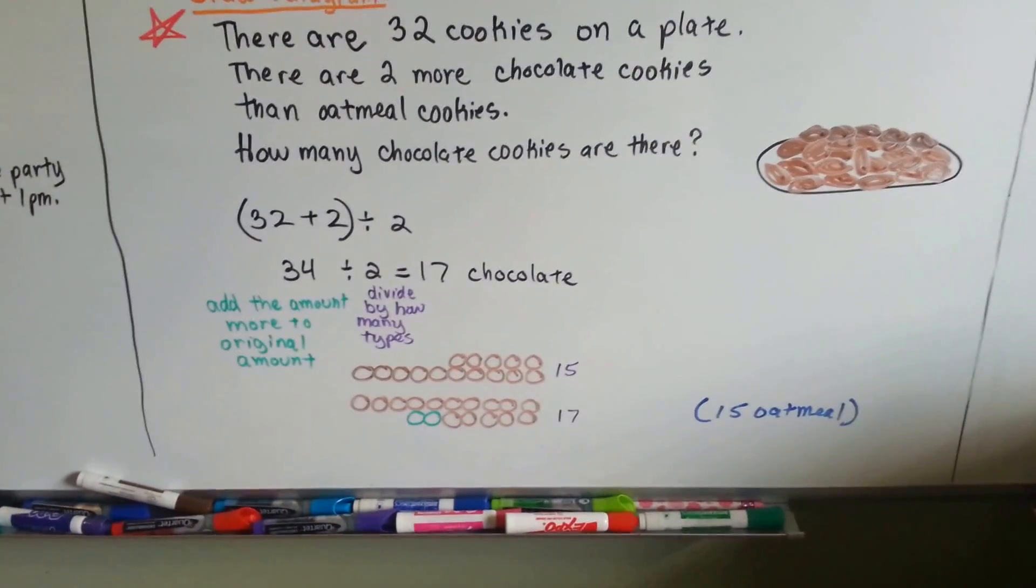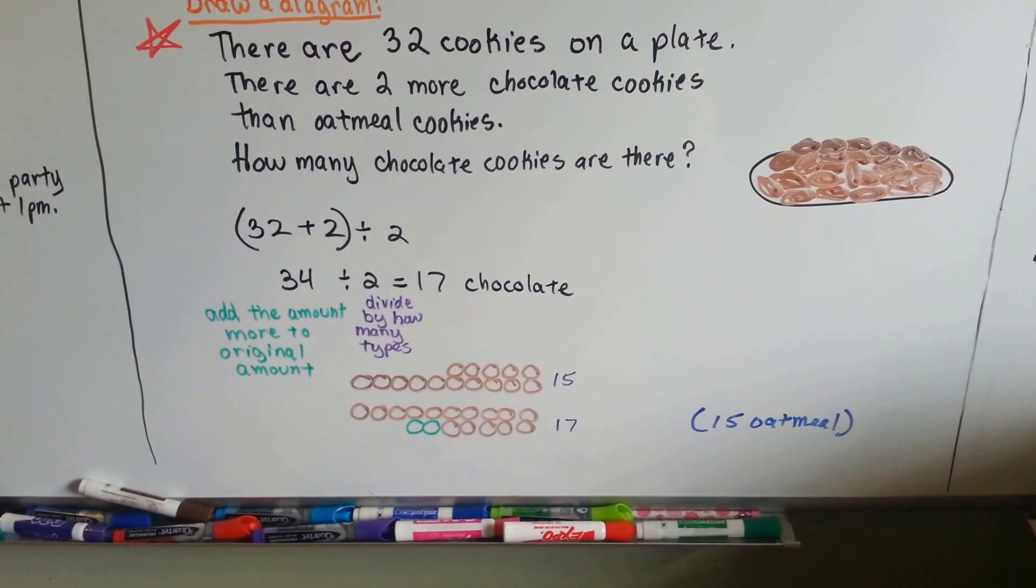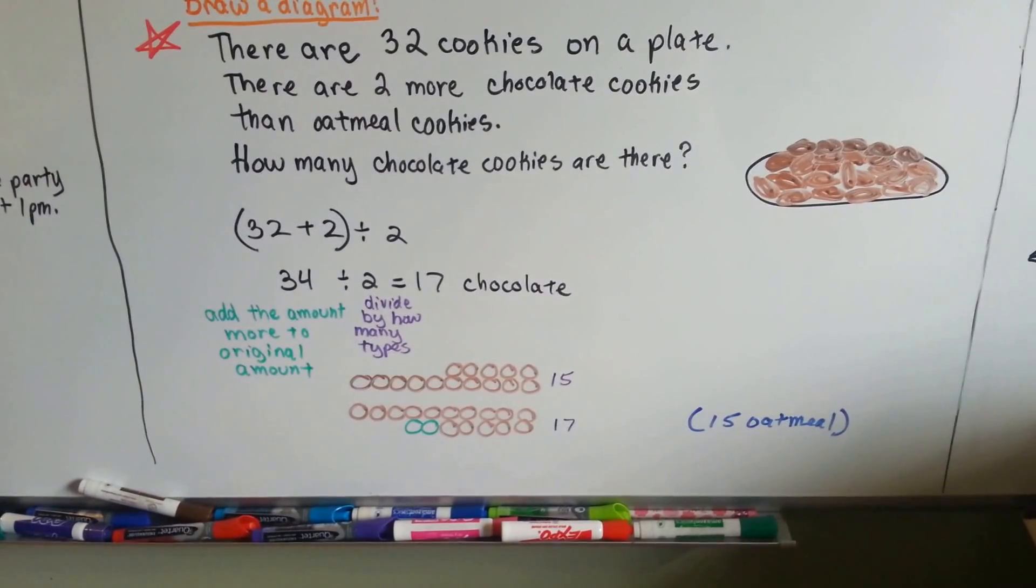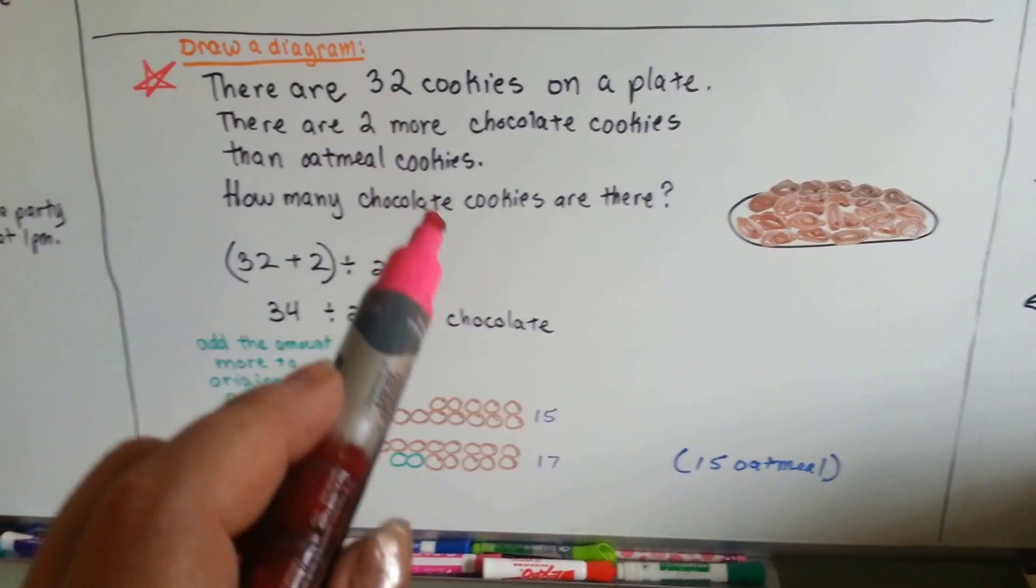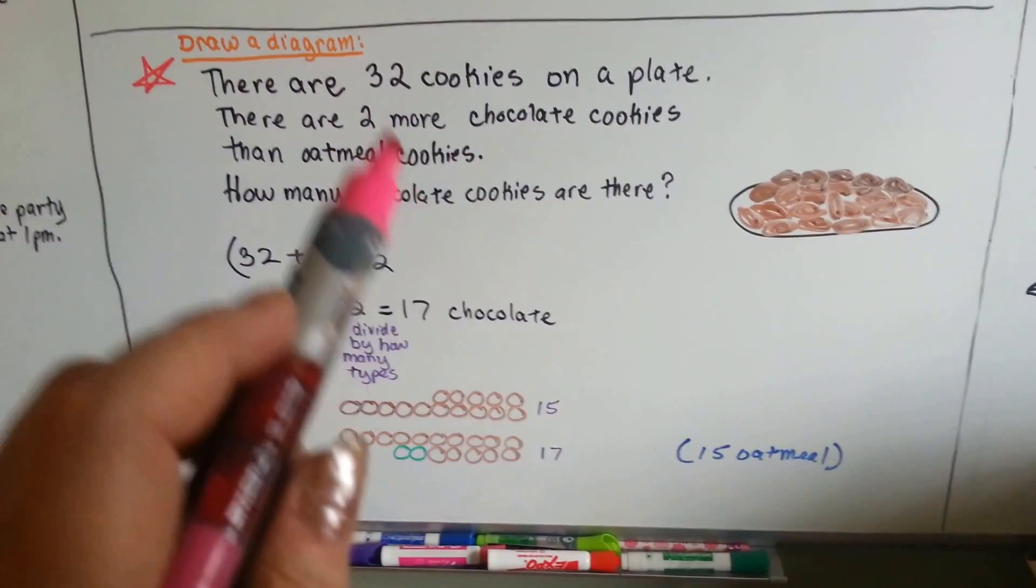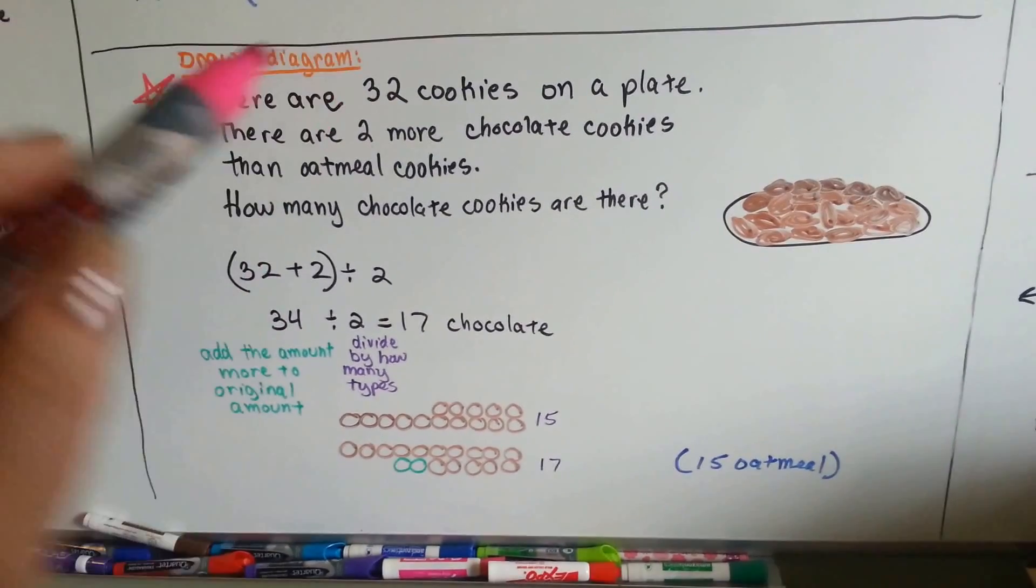Alright, so there's 32 in all, and there's two more chocolate ones than oatmeal ones. So we know there's two types, chocolate and oatmeal. So, if we divided the 32 in half, we'd have 16 chocolate and 16 oatmeal. But there's two more chocolate than oatmeal. So here's what we do.